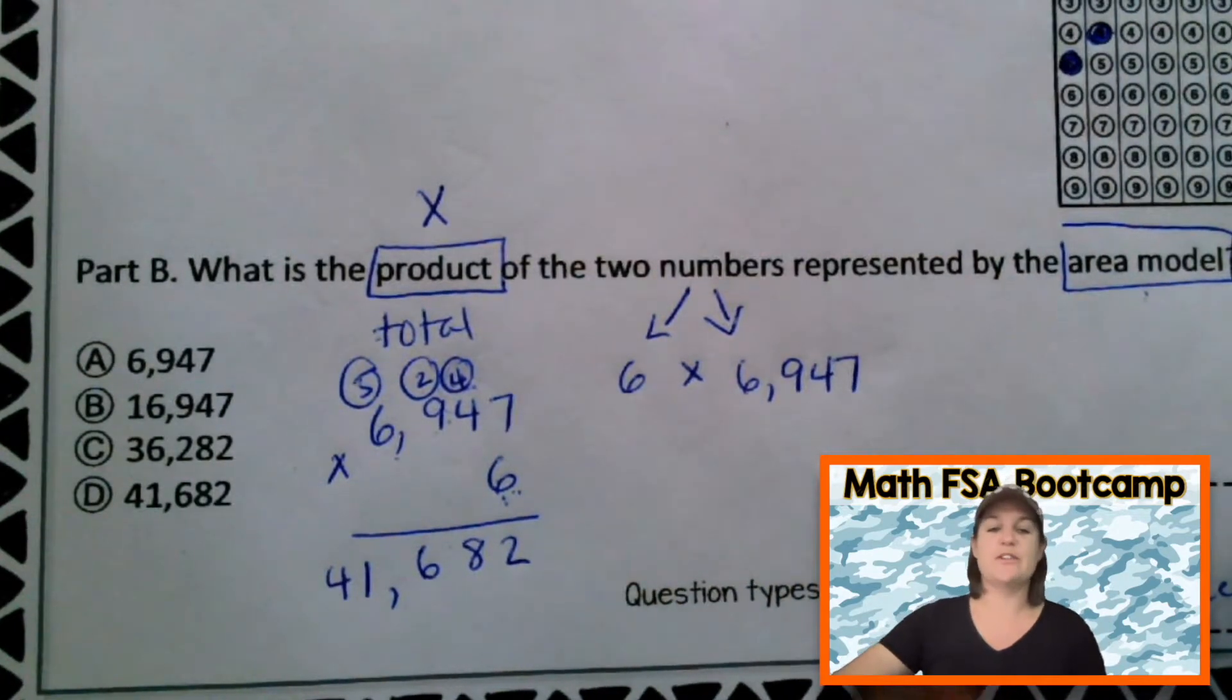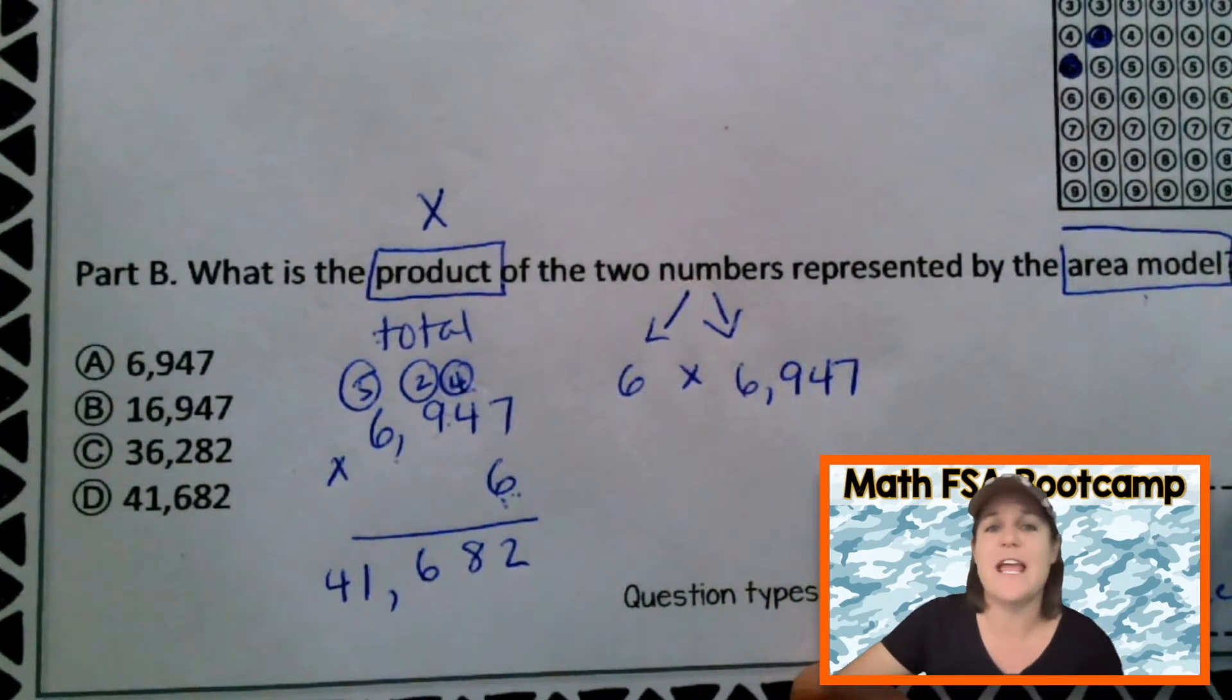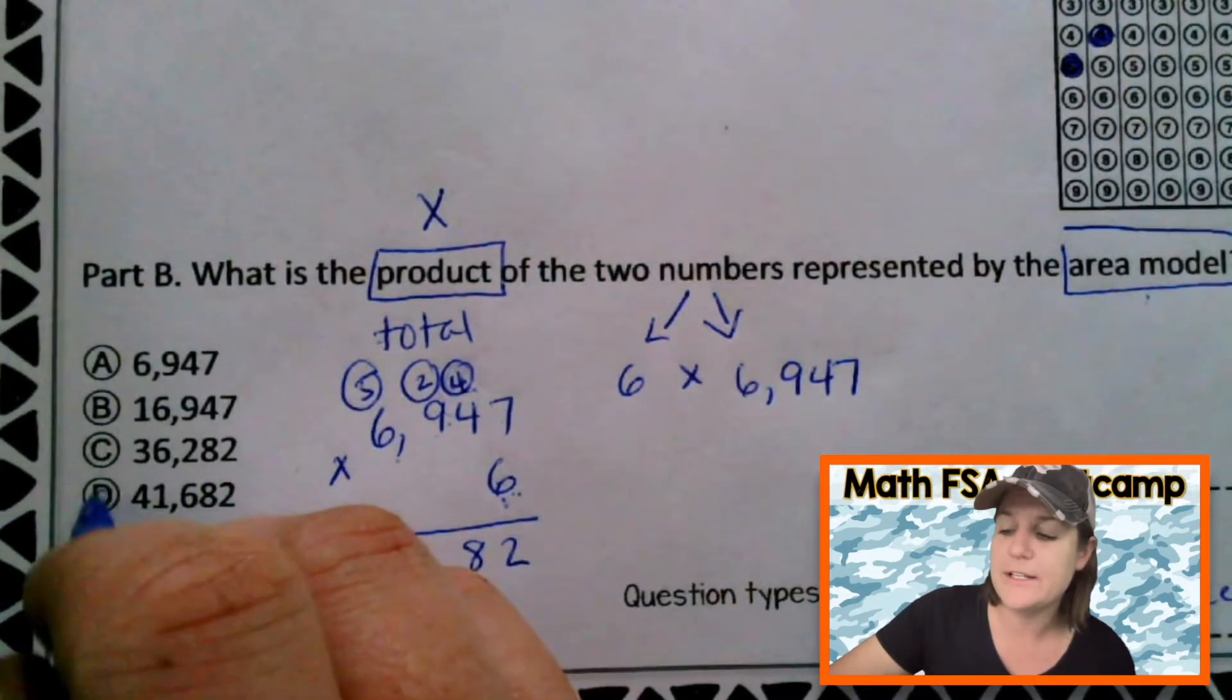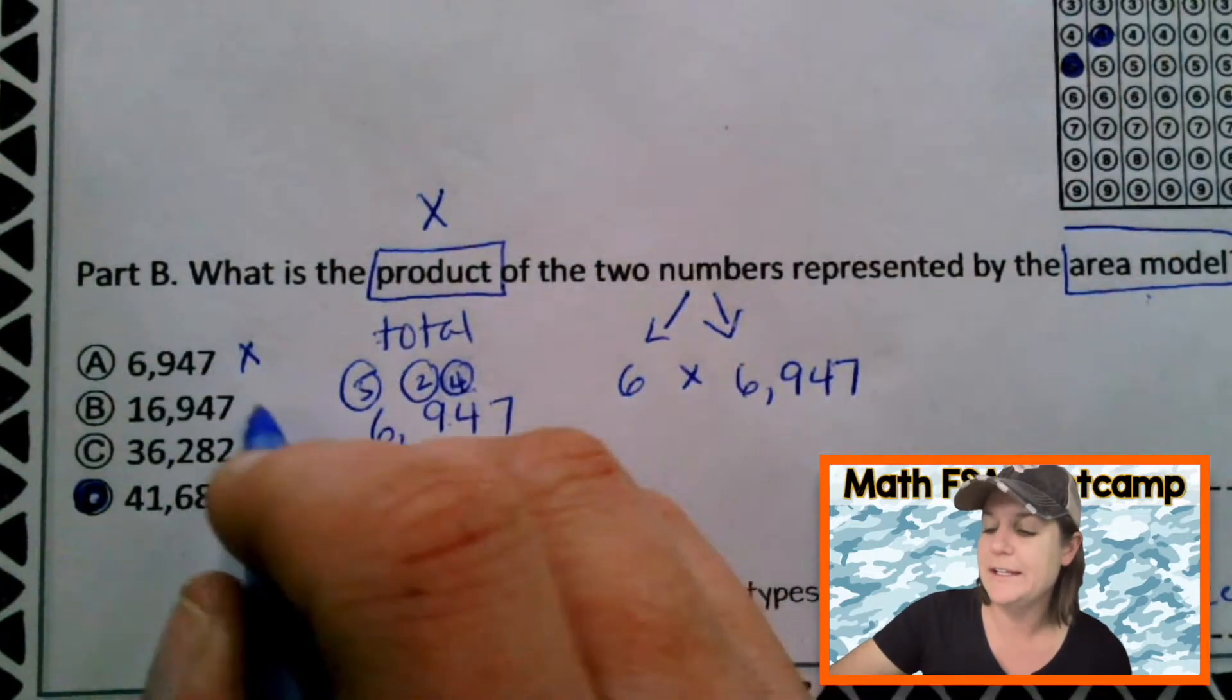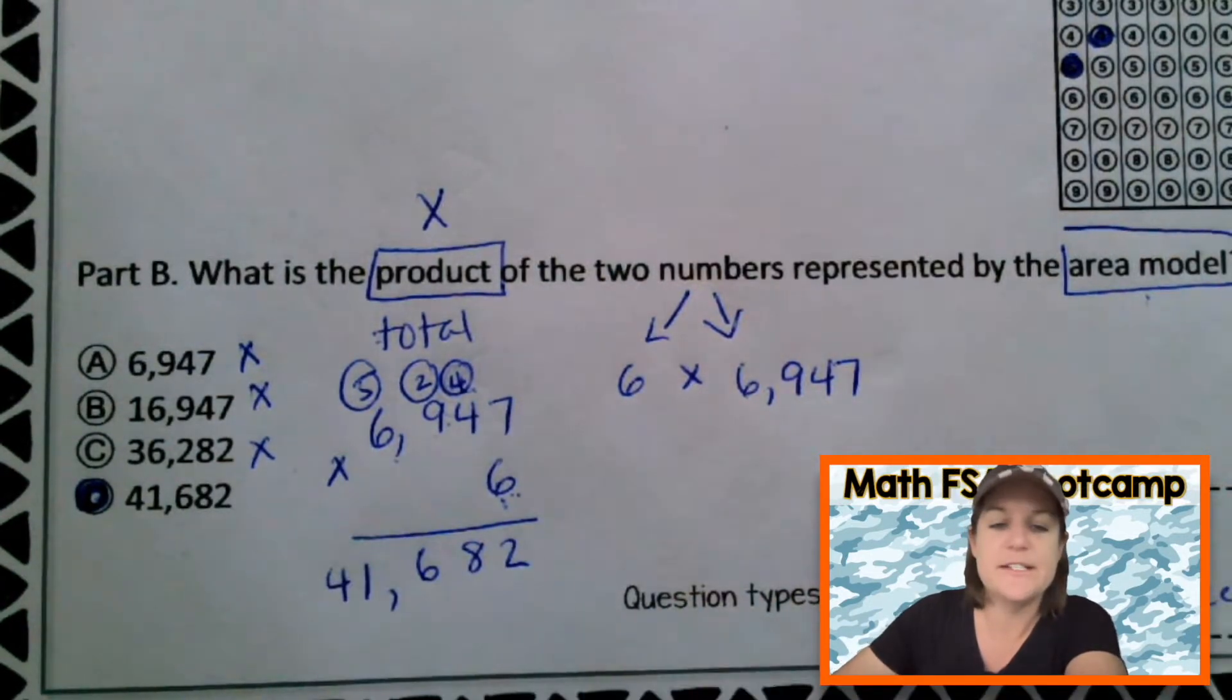So forty-one thousand six hundred eighty-two. Do you see that as an answer, y'all? I do, too, right here at D. It's not that one. That was what we originally had. It's not B or C either. It is D.